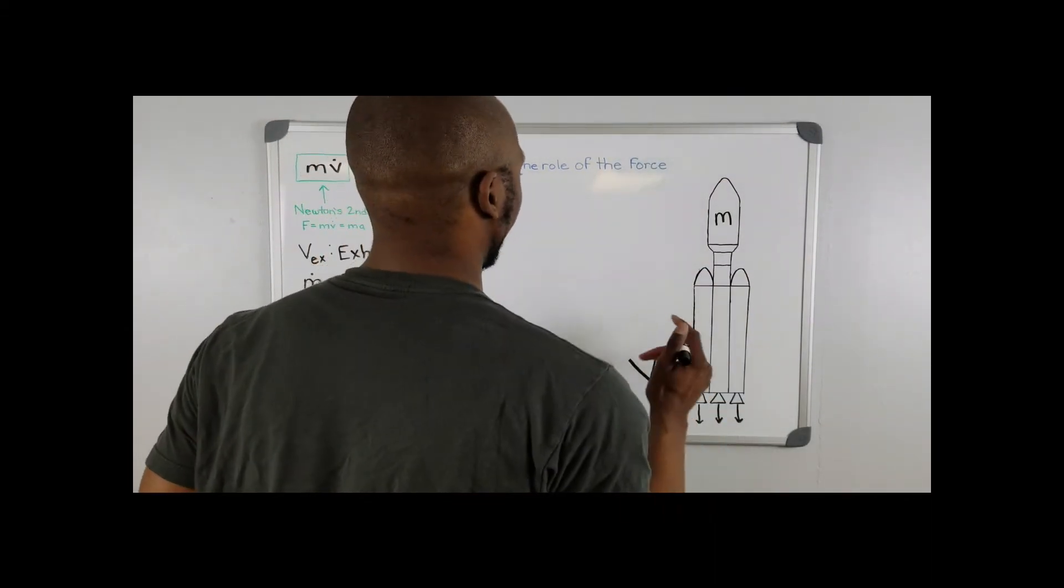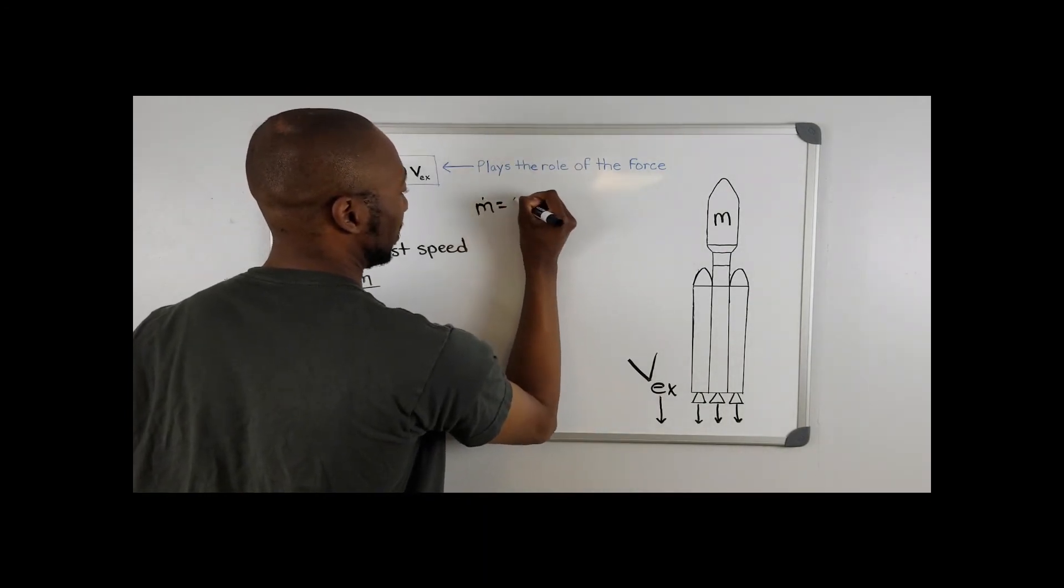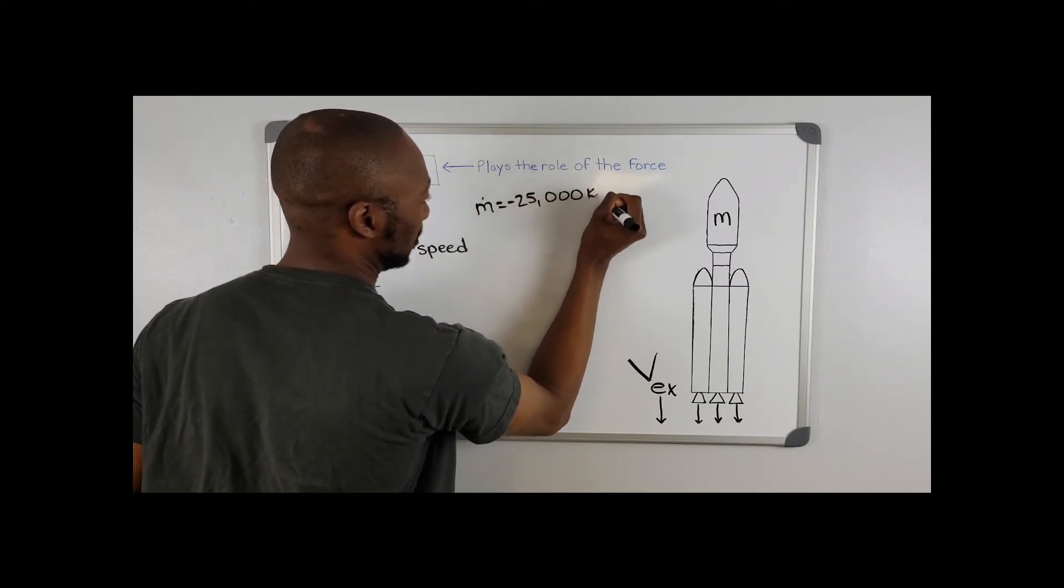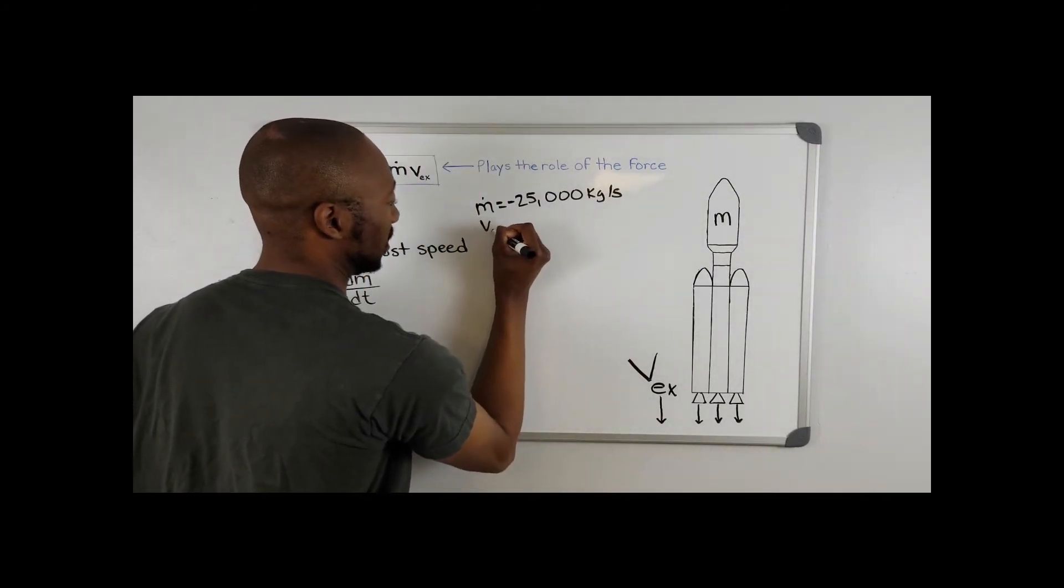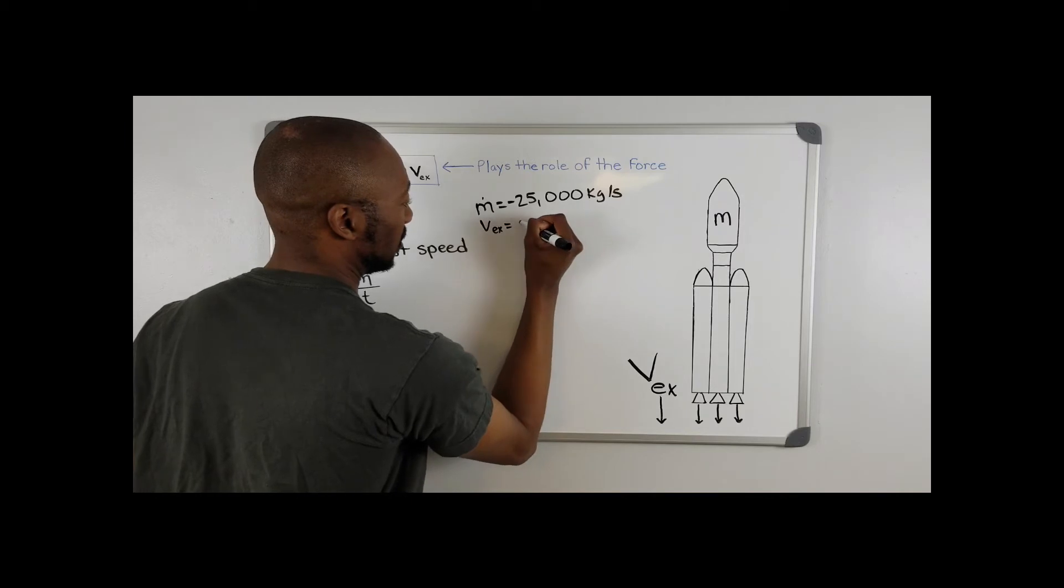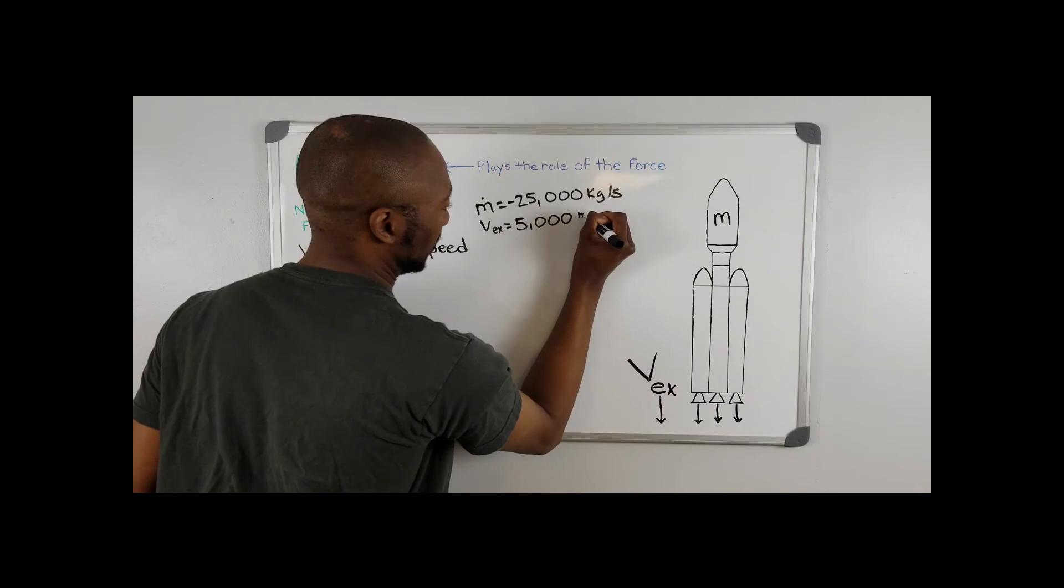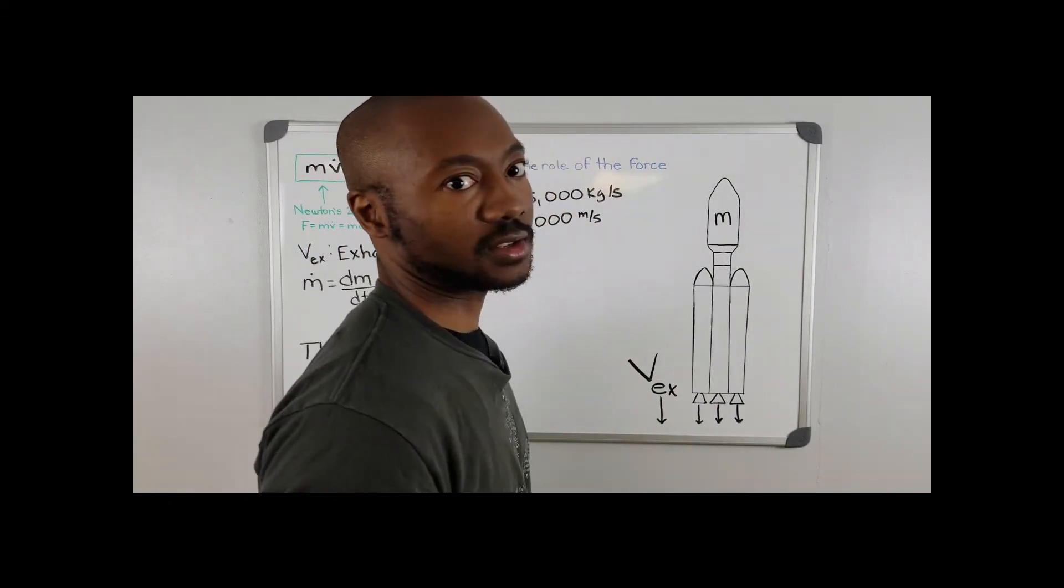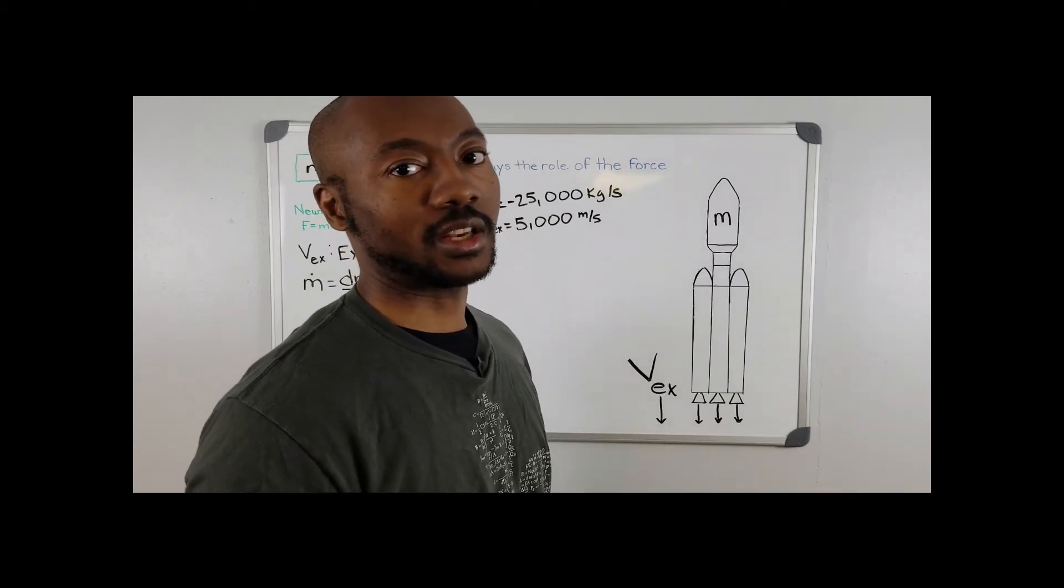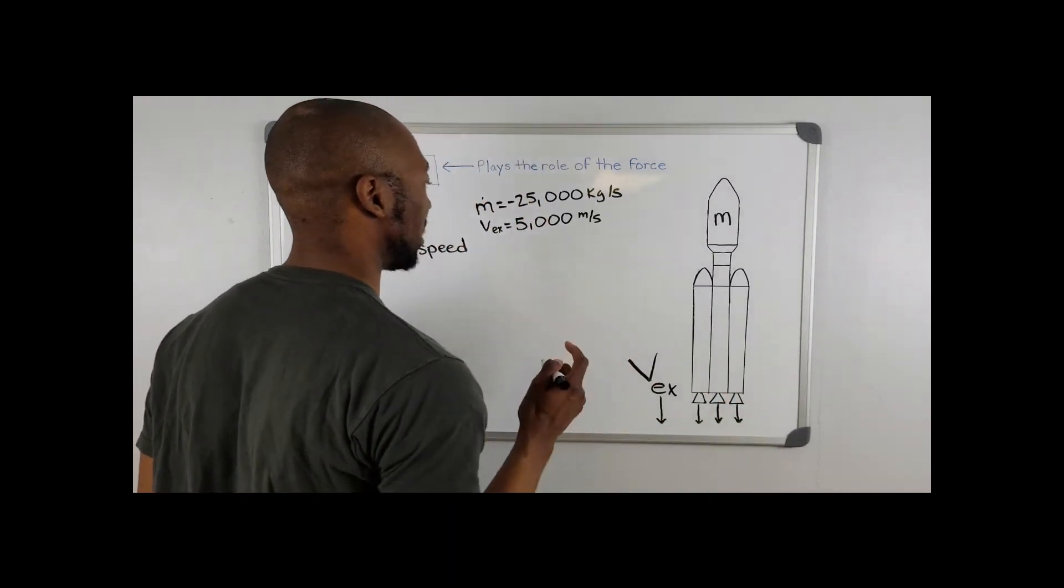Now, suppose after launch, our rocket was expelling mass at a rate of 25,000 kilograms per second. And its exhaust velocity was reaching speeds of 5,000 meters per second. So let's use our equation for thrust that we just went over to calculate how many pounds of force is being used on by the rocket here.